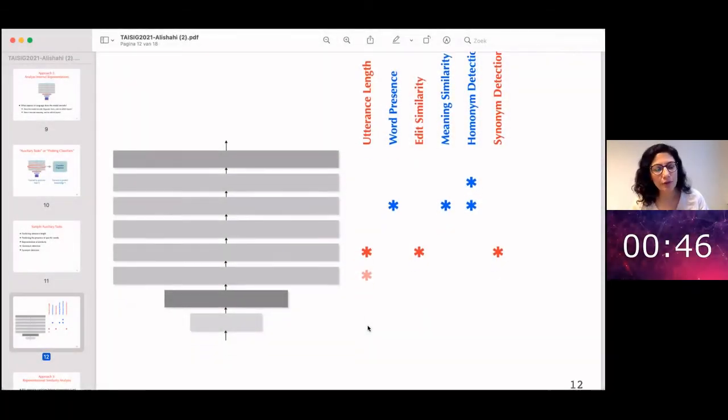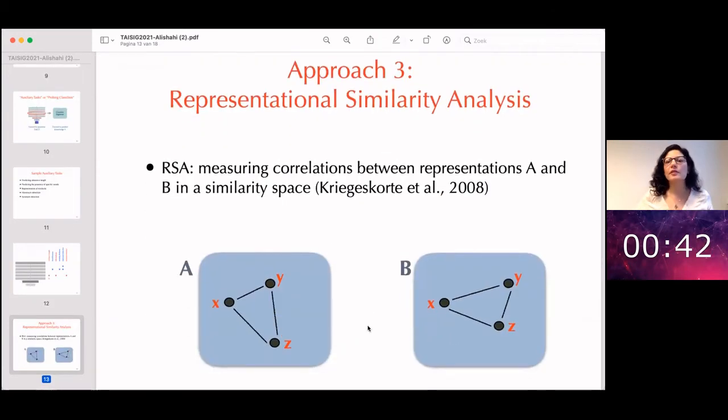The last approach that I wanted to tell you about is representational similarity analysis. In the case of probing classifiers or auxiliary tasks, we are trying to map representations learned by a model to a different representational space, for example, to the space of morphology or syntax. But when these representational spaces become more complex or structured, then these probing classifiers don't work very well. So here, a different type of technique that is borrowed from computational neuroscience comes to our rescue. This is called representational similarity analysis.